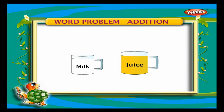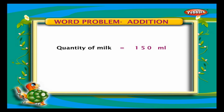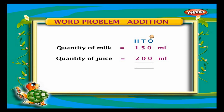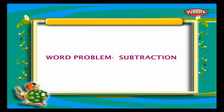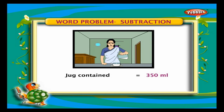Word problem — Addition: Mira drank a cup of milk which is 150 milliliters, and Nitya drank a cup of juice which is 200 milliliters. What is the total capacity of both the liquids? Quantity of milk = 150 ml. Quantity of juice = 200 ml. Add ones — we get 0. Add tens — we get 5. Add hundreds — we get 3. The total quantity of liquid together is 350 ml.